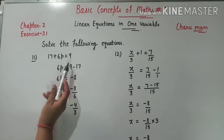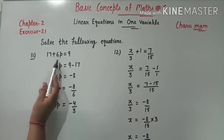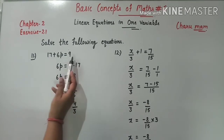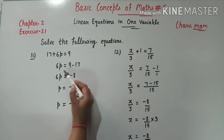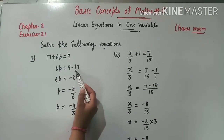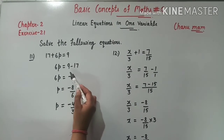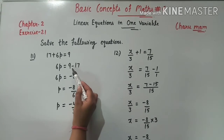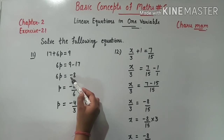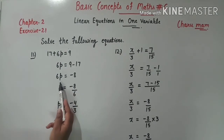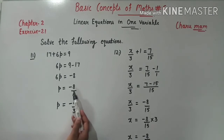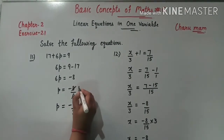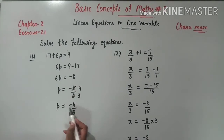Question 11: 17 plus 6P equals 9. Plus 17 right side जाएगा तो minus में होगा: 6P = 9 - 17 = -8. Greater number 17 है जिसका sign minus है, तो result -8 होगा. 6 divide में जाएगा; simplify: 2×3=6, 2×4=8, so P की value है minus 4 upon 3.